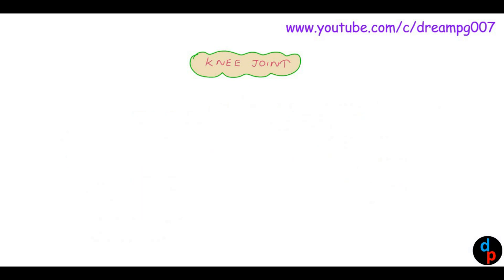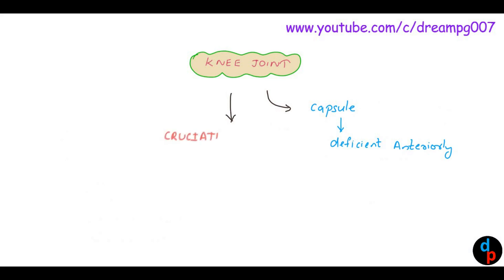The knee joint is a compound synovial joint and it is covered by a capsule. This capsule is deficient in the anterior part. The other group of ligaments which protect this joint is the cruciate ligament.